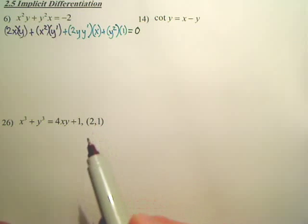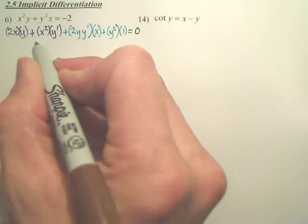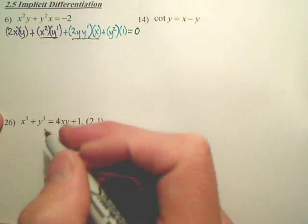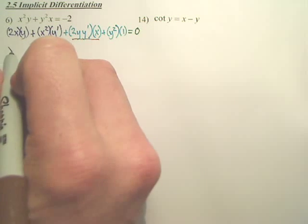So this process is, first, you get y prime on one side. If I look at this piece and this piece, don't you have a y prime? I'm going to leave those two pieces together on the left side.